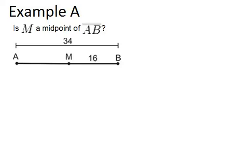Remember that to be a midpoint, a point has to be exactly in the middle of a segment. Basically, either side of the midpoint has to be the same length. So in this case, if the whole segment is 34 units long, then the midpoint should be exactly in the middle of 34, and 34 divided by 2 is 17.